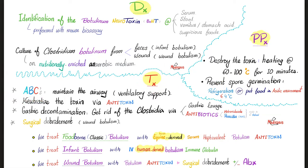Treatment: ABC comes first — A stands for airway, maintain the airway first. Then neutralize the toxin by giving an antitoxin. Get rid of the bacteria — which prevents formation of future toxin — via gastric lavage and antibiotics. Antibiotics include metronidazole and penicillin, the same two antibiotics used for Clostridium tetani, because both are members of the Clostridia family. In cases of wound botulism, surgical debridement is needed.